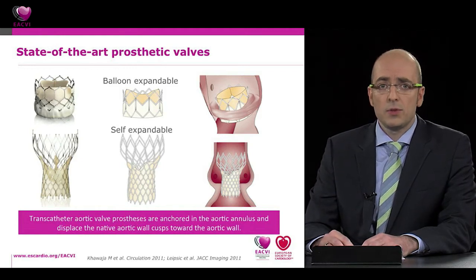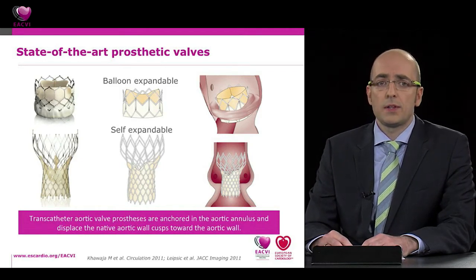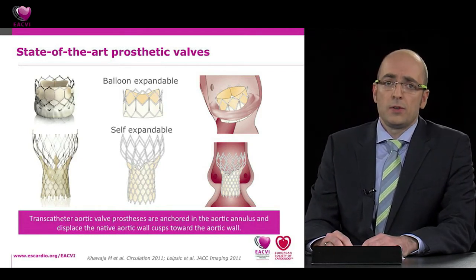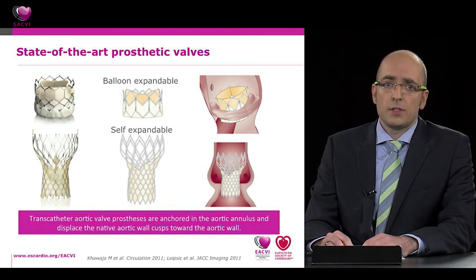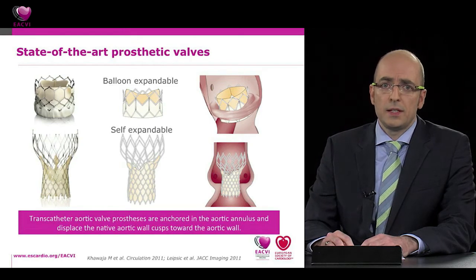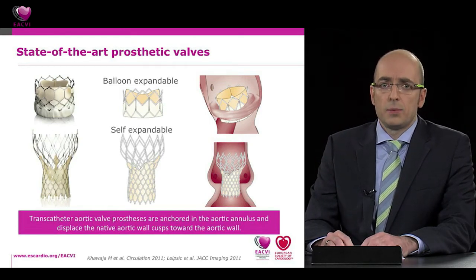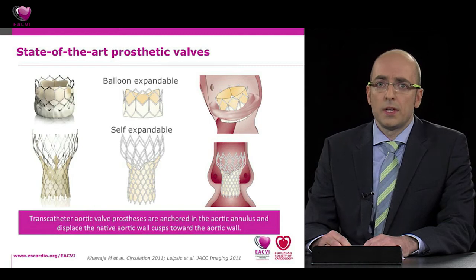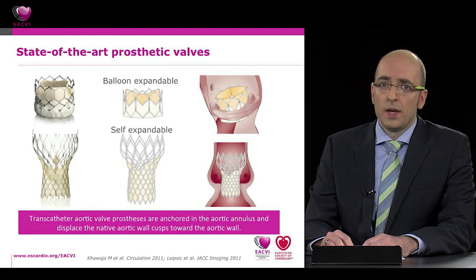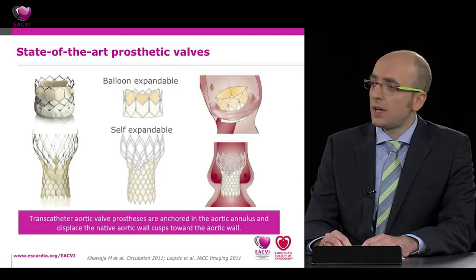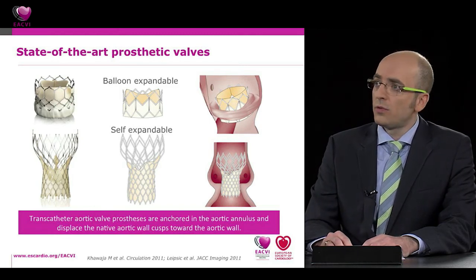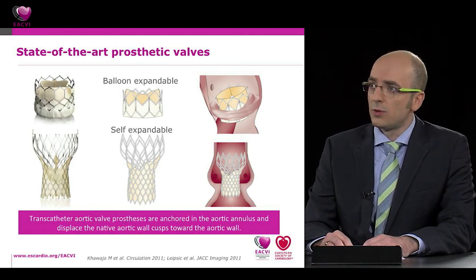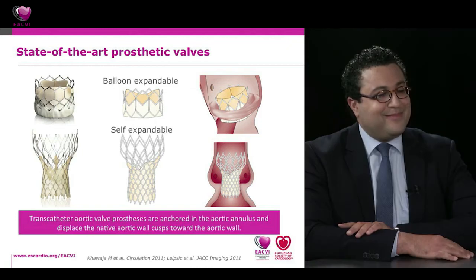Currently, there are two main types of state-of-the-art prosthetic valves: balloon-expandable and self-expanding designs. The most important structure is the annulus, where transcatheter prostheses are anchored. Precise planning is critical because the implanting physician has no direct view of the aortic valve, as opposed to surgical aortic valve replacement. During implantation, the TAVI prosthesis displaces the native aortic valves and pushes the cusps toward the aortic wall.